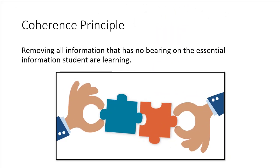The first principle is the coherence principle. Coherence principle is the instructor or designer taking out all irrelevant information — anything that doesn't have a particular reason to be there to help students learn, or something extra that may or may not help them understand what they're learning.